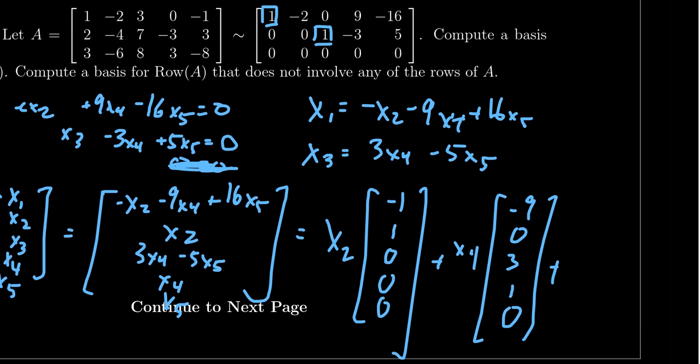The last one we're going to get is x5 which would be 16, zero, negative five, zero, and one. So then these three vectors form a basis for the null space and we should record as much.